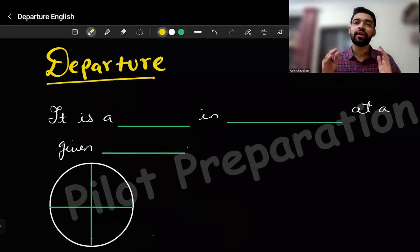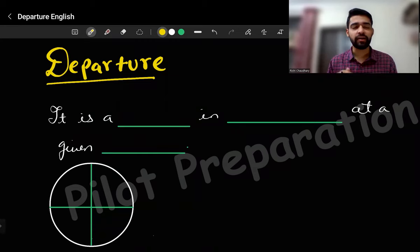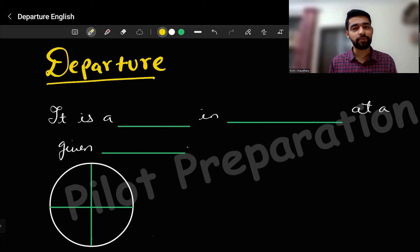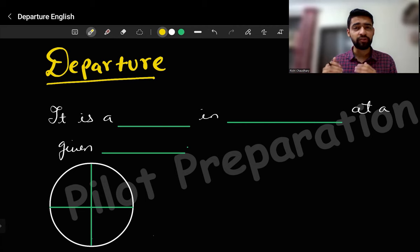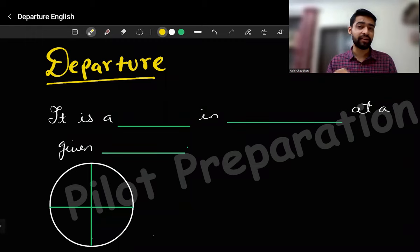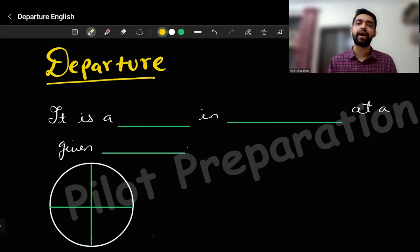Hello Future Pilots, you are watching Pilot Preparation. Today we will be starting a new chapter called Departure. But before this, I want you to watch the previous videos which are related to the Earth, a full chapter, and where one degree equals 60 nautical miles. Because the terms which you will see in this chapter are all discussed in detail already. So please go to the link in the description and watch those videos and come back.